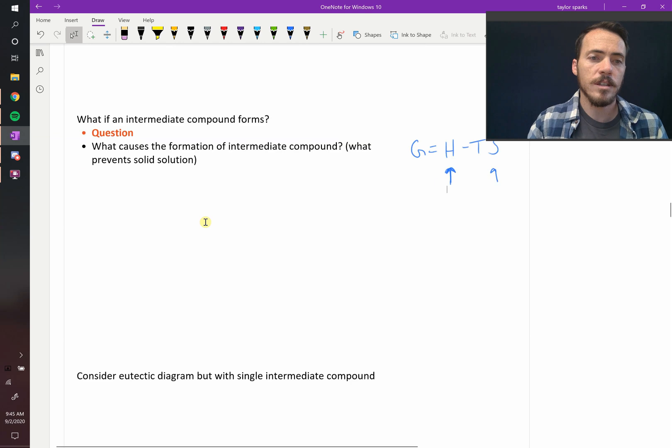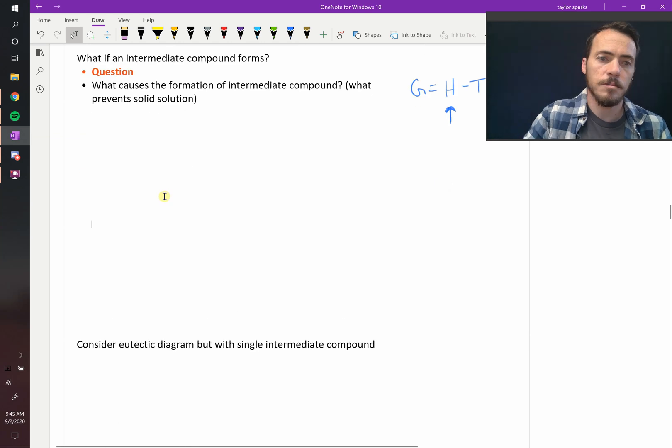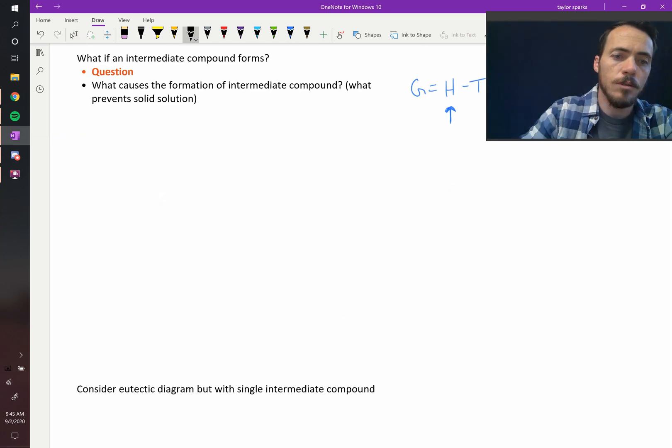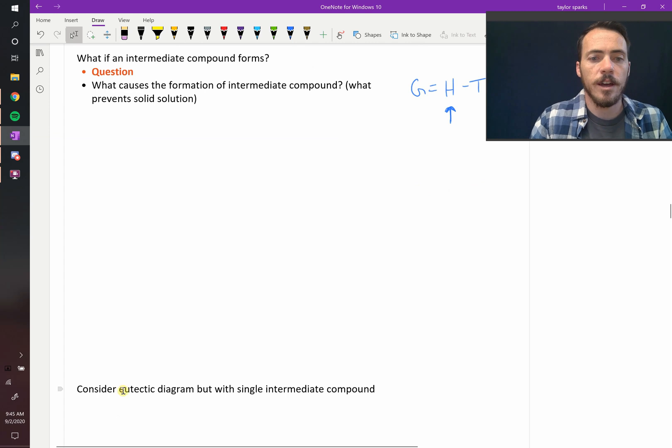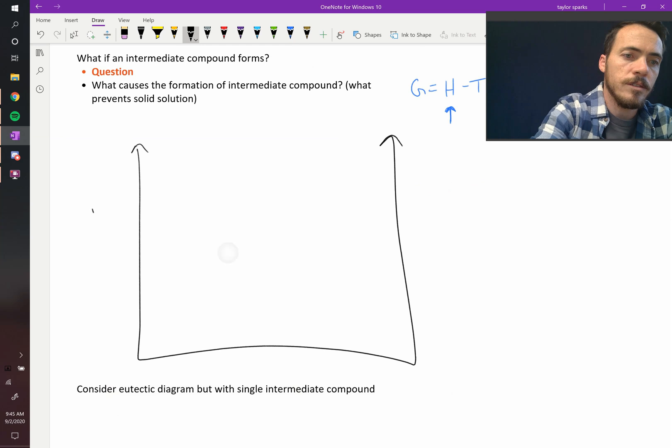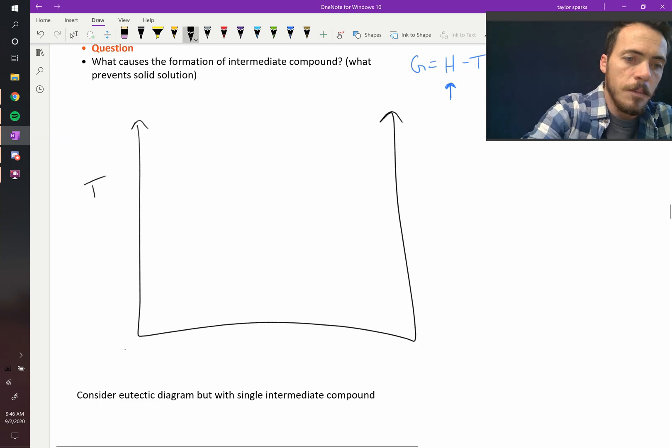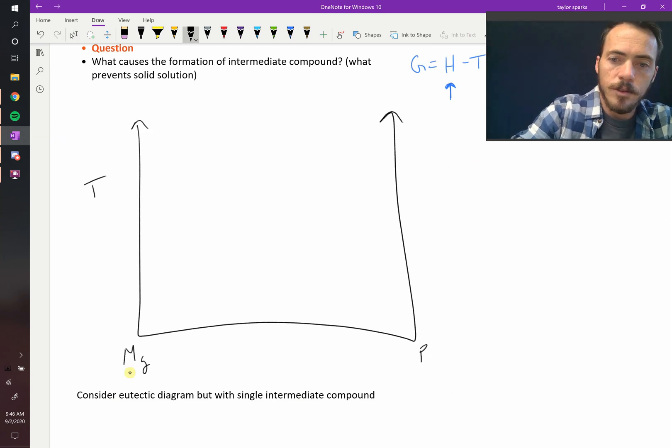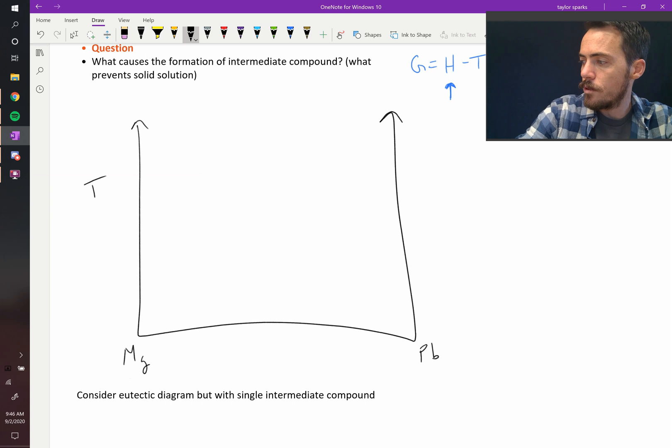Now, what does it look like? Let's draw a picture of what this might look like. So we're going to consider this eutectic diagram, but with a single intermediate compound. So I'm going to draw this like so. We've got temperature here, let's say this is magnesium and this is lead.